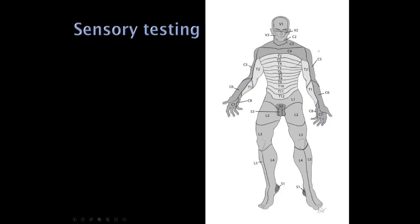In terms of sensory distributions: C5 supplies the lateral shoulder; C6 goes down into the lateral forearm and thumb; C7 is digits 2, 3, and 4 in the palm; C8 is the fifth digit; and T1 goes up the medial forearm. There is some overlap — some dermatomal maps show the index finger as C7, but it can be C6 or C7. We shouldn't make too big a deal of that variation.